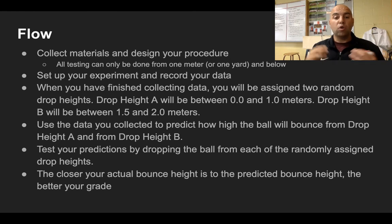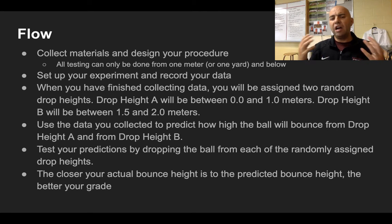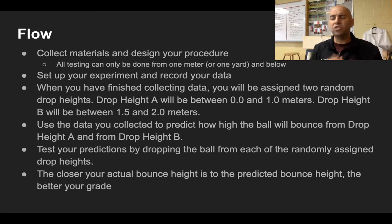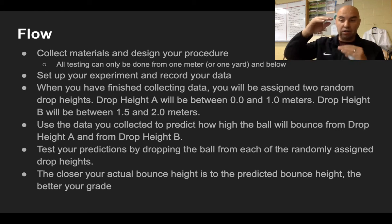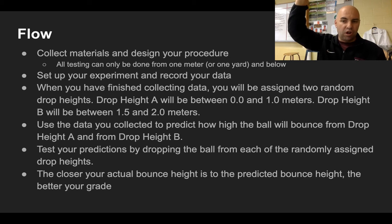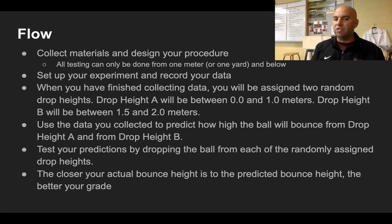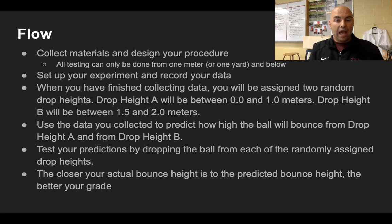Set up your experiment, do it, record your data. When you finish collecting your data, you're gonna say, 'Mr. Spencer, I've got all this data — I'm ready to get my random drop heights.' I'm gonna say send me your stuff, I want to take a look at it. When we've got the thumbs up, I'm gonna give you two heights. Drop height A is gonna be somewhere between the ground and one meter or one yard. Drop height B is gonna be somewhere between 1.5 and two meters, or one and a half and two yards. Use the data that you've collected before, and the graph and the y equals mx plus b, and go predict how high you think that ball is going to bounce from drop height A and from drop height B.